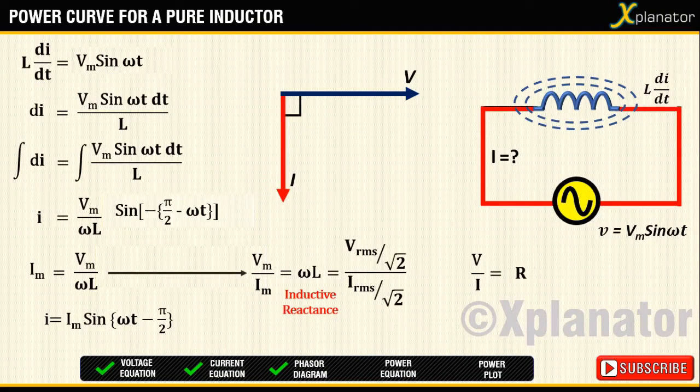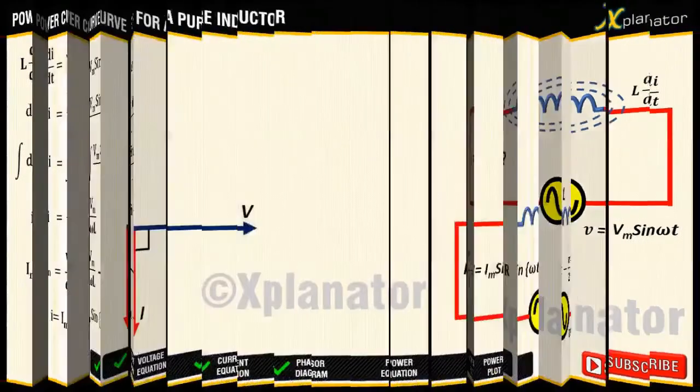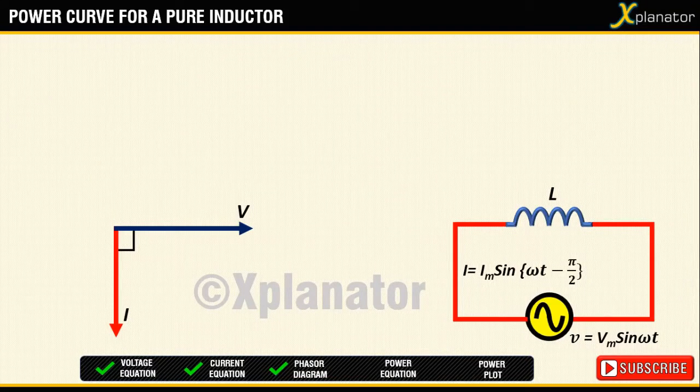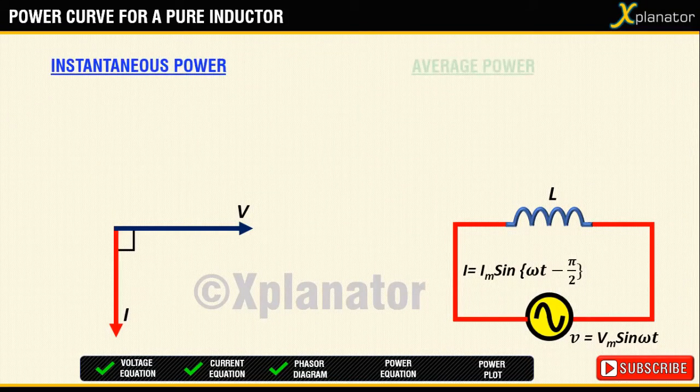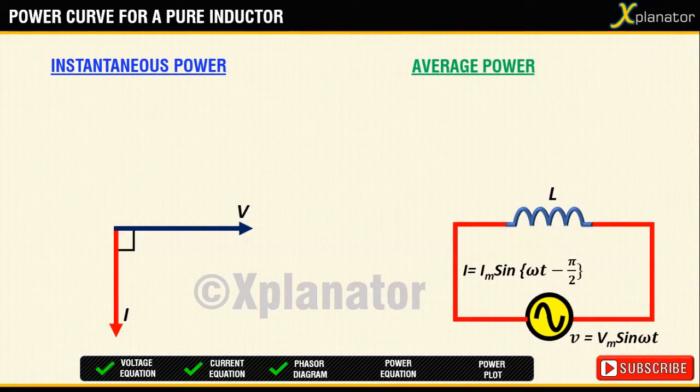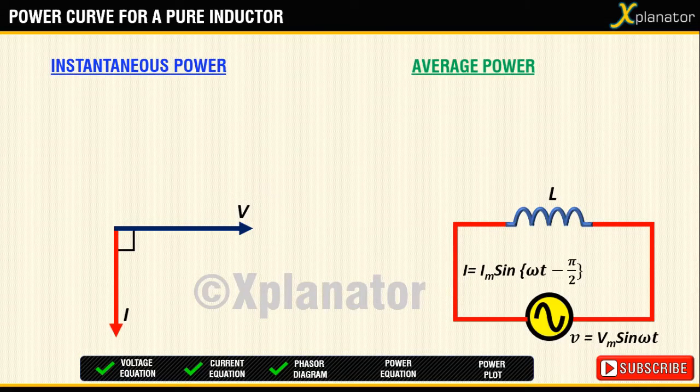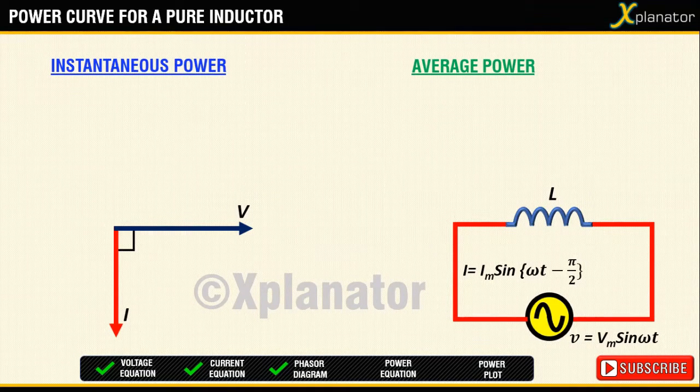Our next step is to find an equation for power consumed in the circuit. The power consumed in the circuit is of two types: one is instantaneous power and the other is average power. Instantaneous power is what is consumed at the moment, while average power is considered over the whole cycle.